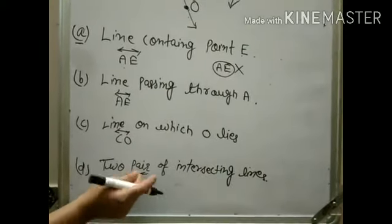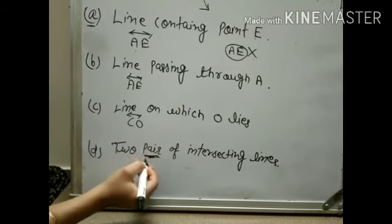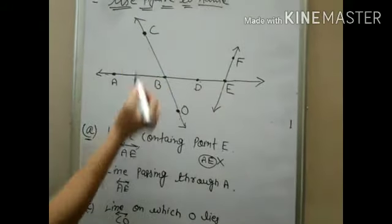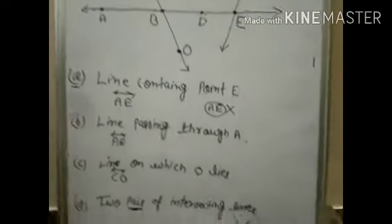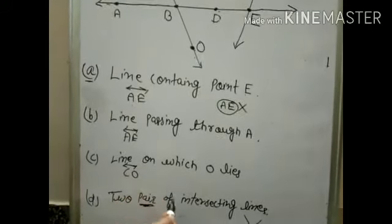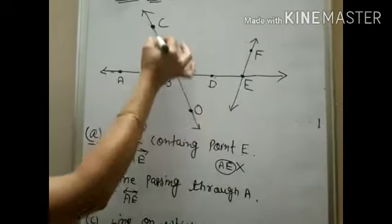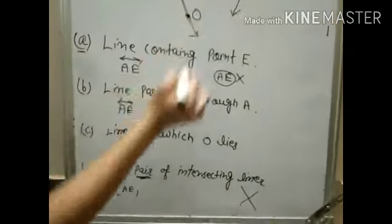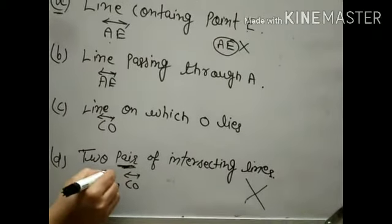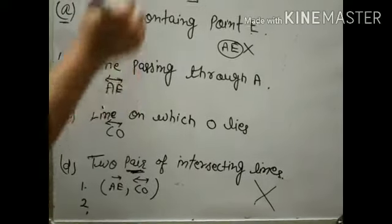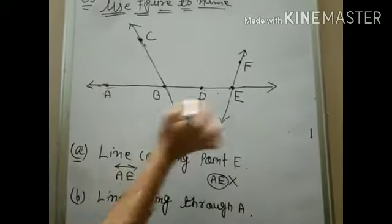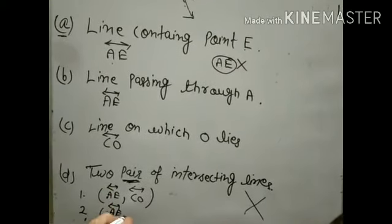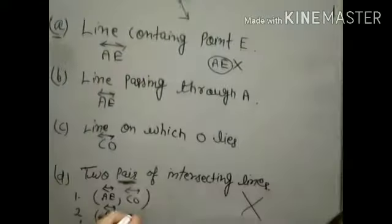Two pairs of intersecting lines: pair means two lines together — two lines in each pair. First pair: line AE and line CO — make the proper line symbol. Second pair: line AE and line FE — these are intersecting lines as well. So this is the answer to question number 3.